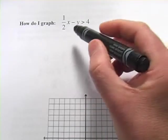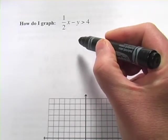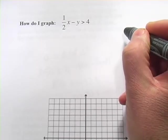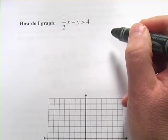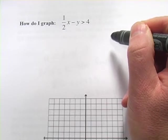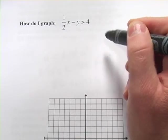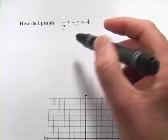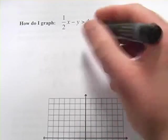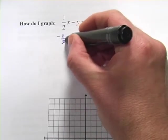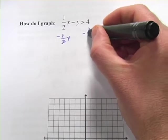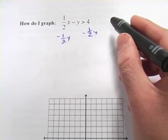What you want to do is try to solve this thing for y. Get y alone on the left and everything else over on the right, and then you'll have it in something that's sort of like that y equals mx plus b form, so we can figure out the slope and the y-intercept of the line. So let's solve this for y first. I'm going to subtract 1 half x to begin with, to get this x term over on the right.